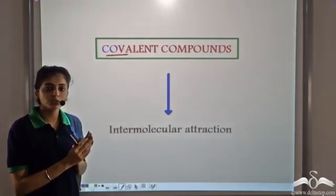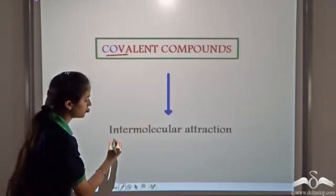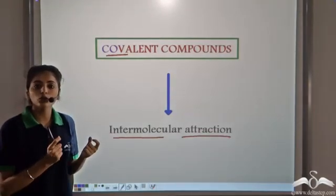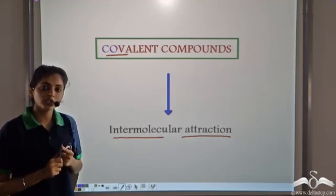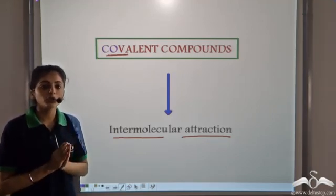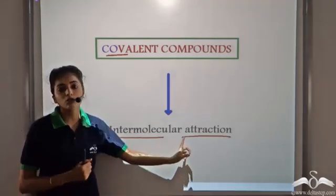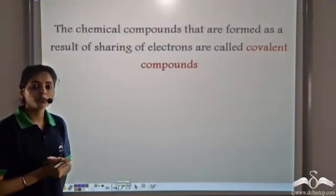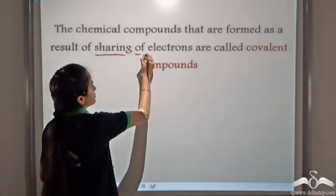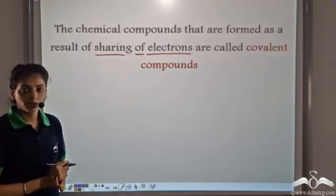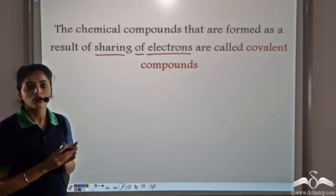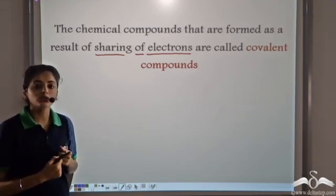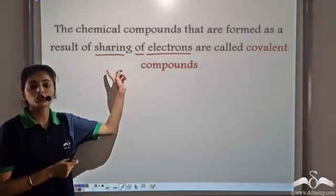The type of attraction between the atoms is intermolecular attraction. In ionic compounds, the type of attraction between the two ions is electrostatic force of attraction. In covalent compounds, the type of attraction between the two atoms is intermolecular attraction. Covalent compounds are formed by the sharing of electrons, whereas ionic compounds are formed by the transfer of electrons.